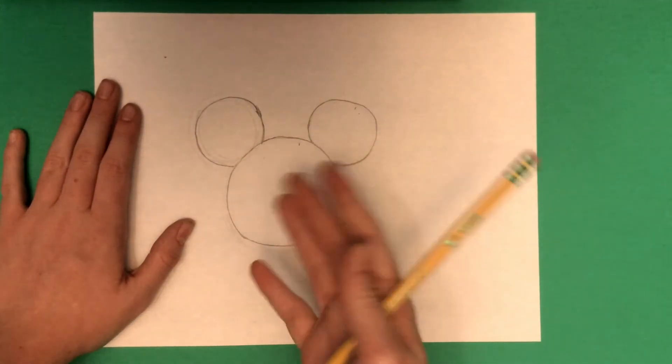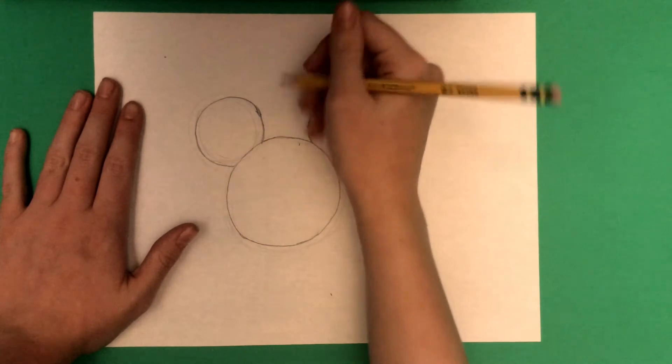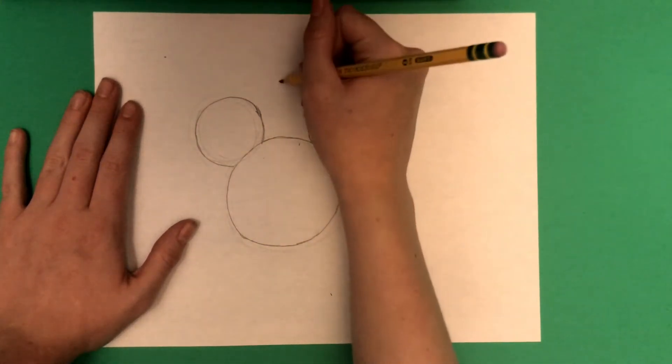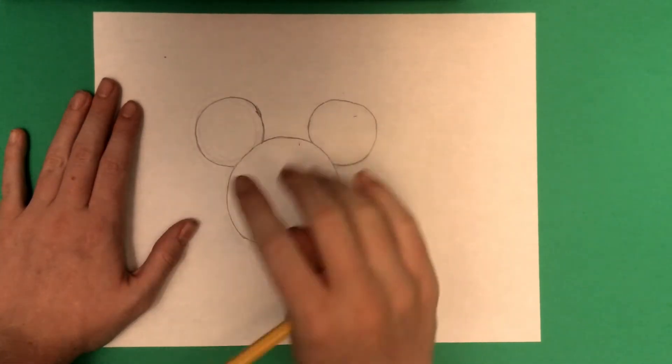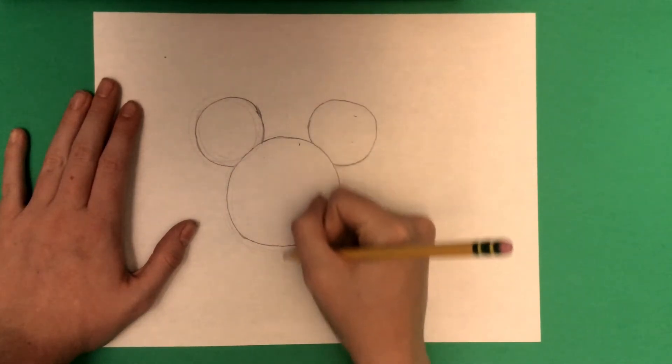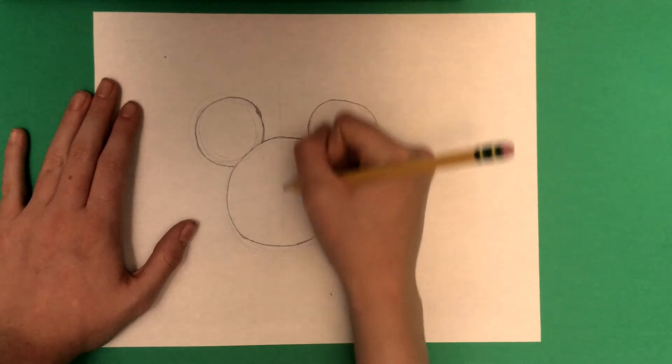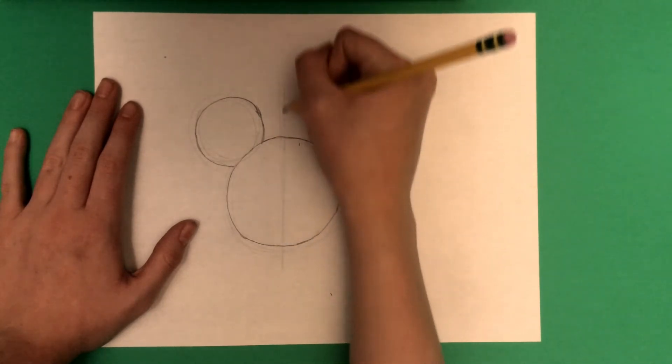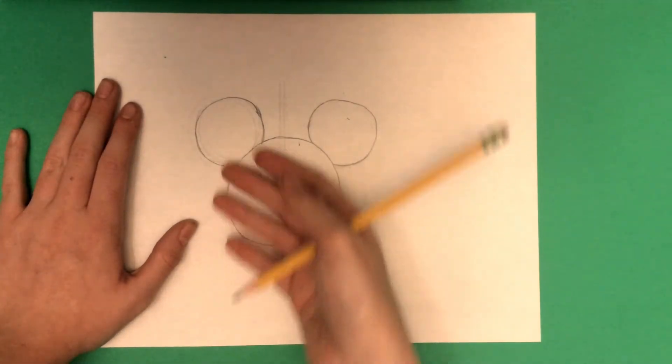We are going to move on to his actual facial features. You're going to start in the middle with a very light line down right in the middle of his face. It doesn't matter if it's good. You're going to erase it anyways. Go down the middle, a very, very light line. You don't have to darken it up, not for this line.